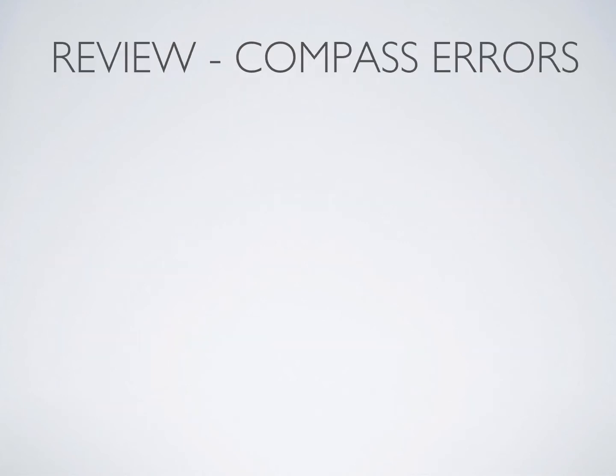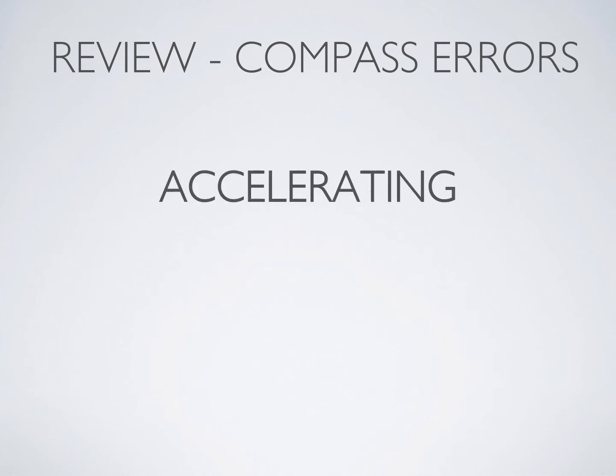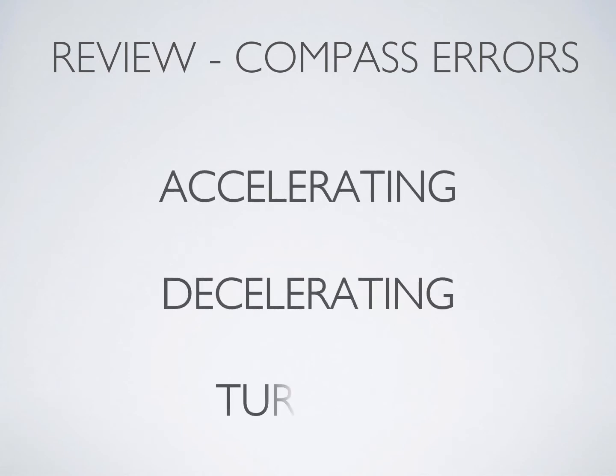Before we go further, let's quickly review compass errors. The compass is north-seeking, and here in Canada that creates a dipping tendency that is offset from the pivot point of the compass. The compass is designed that way so it sits more level in the cup and is more readable. What that means in practice is that here in Canada, the compass will give erroneous readings when you're accelerating, decelerating, or turning — in those conditions, the compass is not reliable.